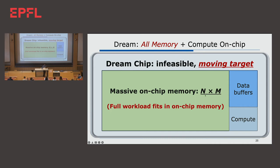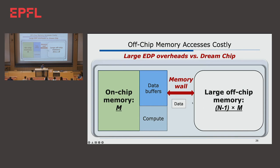On this dream chip, I say the amount of on-chip memory is N times M — there's a reason for this. We cannot build a dream chip, so in today's world, what we do is put M amount of memory on-chip, then N minus 1 times M amount of memory off-chip. And you have the memory wall — large energy delay product overheads because you spend all your time and energy, talking about San Francisco and Berkeley, the three bridges. That's where the big overhead comes from.